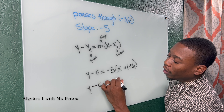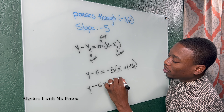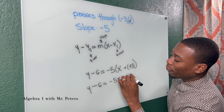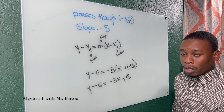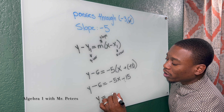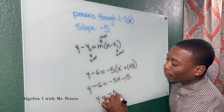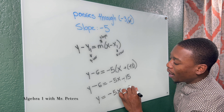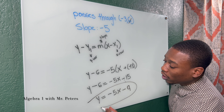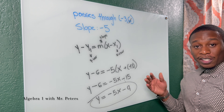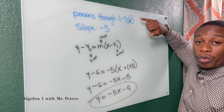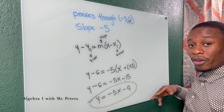So now we clean this up. Y minus six is equal to negative five X minus 15. Combine our like terms: Y is equal to negative five X minus nine. This is the new equation that has a slope of negative five and passes through this point.